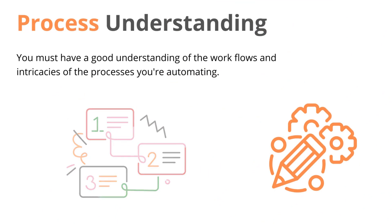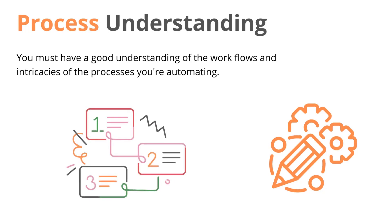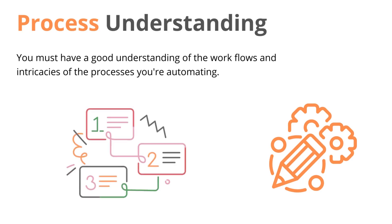The next skill is process understanding. You must have a very good understanding of workflows and process definitions — what exactly the process you are automating is actually doing. The as-is process is very important. This involves working closely with business analysts and subject matter experts to identify automation opportunities and optimize processes.